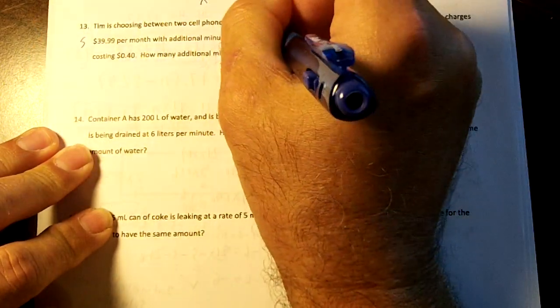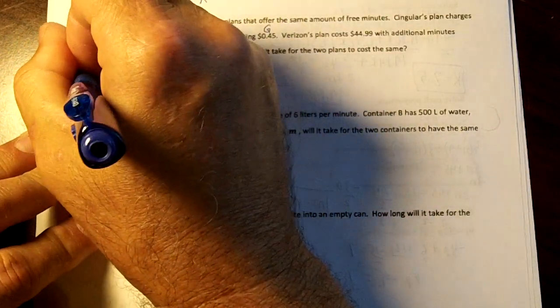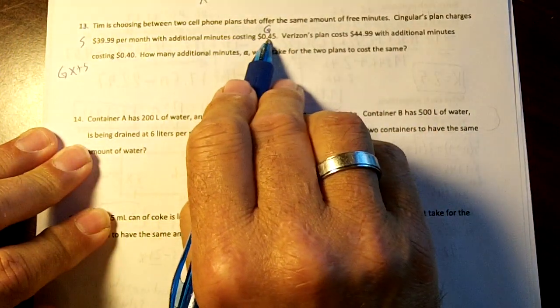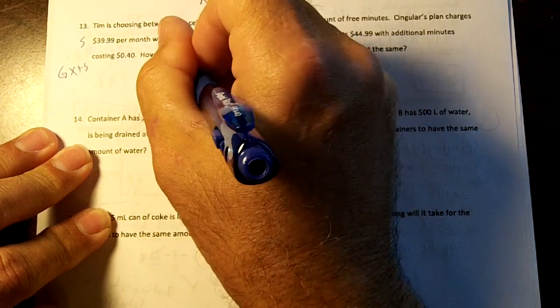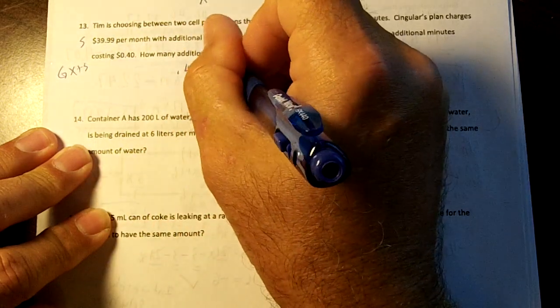So this is going to be our starting number and this is going to be our growing number. You're going to use GX plus S. So we have .45 times a minute, and I'm just going to use X for my minute, plus $39.99.